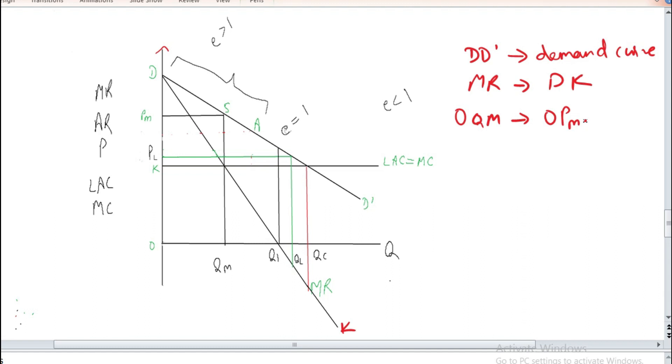Now Bain says that the firm will charge limit price at that section of the demand curve at which elasticity is less than unity. Here on this point you can see that the elasticity is equal to unity. That means according to Bain's the firm will charge a price below this section, below this point M.